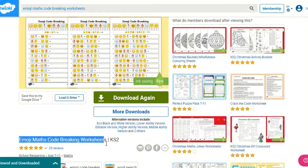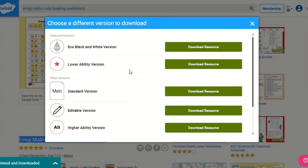Here you can see this resource can be downloaded and printed from the Twinkle website. Alternative versions are available such as an eco black and white version and an editable version to suit your child's needs more specifically.